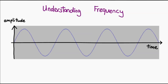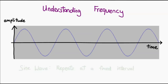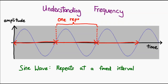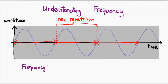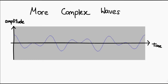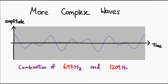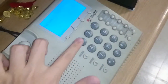Let's say we have a wave that looks like this. This is called a sine wave, and it is interesting to us because it repeats at a fixed interval. Because of that, we can derive its frequency, which is defined as the number of occurrences of the repeating segment per unit time. Not all sounds are as simple as a sine wave, but we can create more complex sounds by mixing multiple sine waves together. For example, the wave you see here is a combination of 697 Hz and 1209 Hz sine waves, and is in fact the sound you hear when you press the 1 button on a telephone keypad.